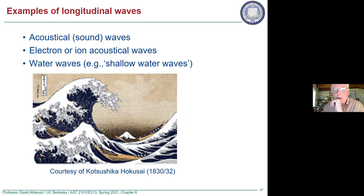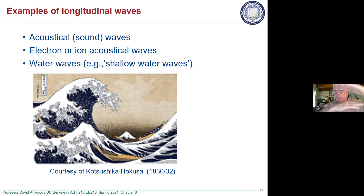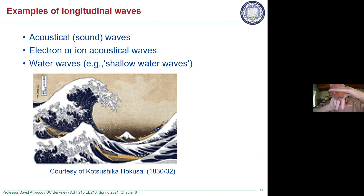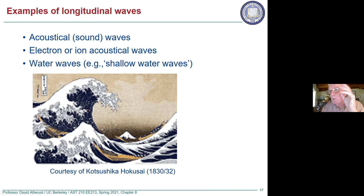Shallow water waves are particularly interesting. When you analyze water waves, you find the velocity of the wave depends on the depth of the water. For deep water waves, they just propagate — that's what you see out in the ocean. But near the coastline, the wave starts to break. In shallow water, the phase velocity depends on depth, and as depth decreases coming toward shore, the phase velocity changes, producing the breaking of a wave.